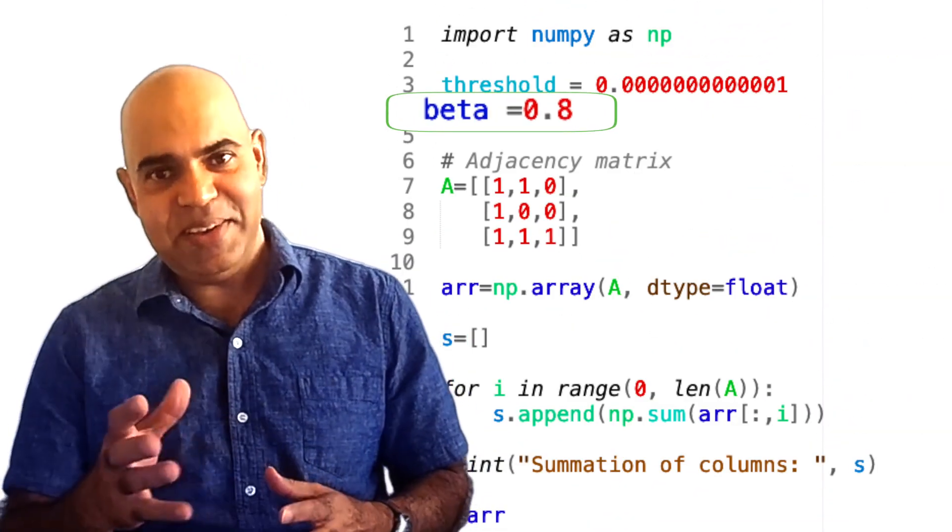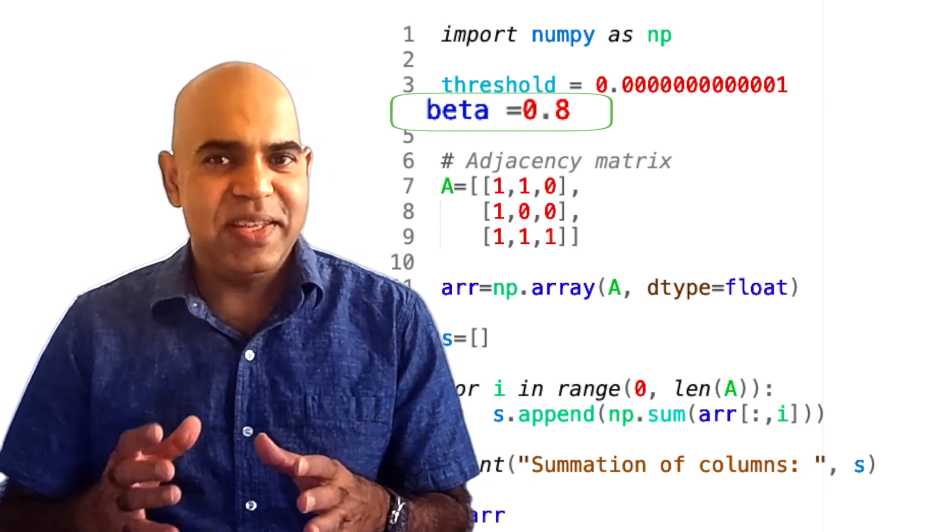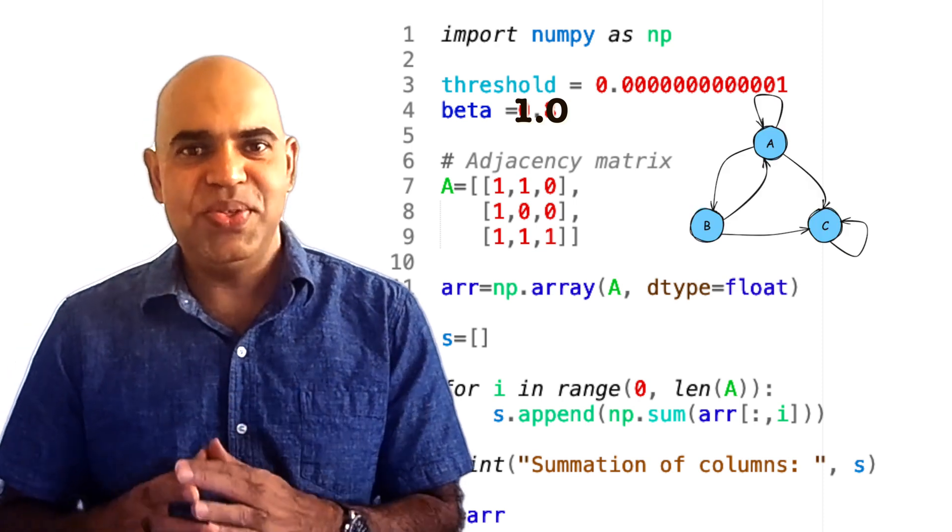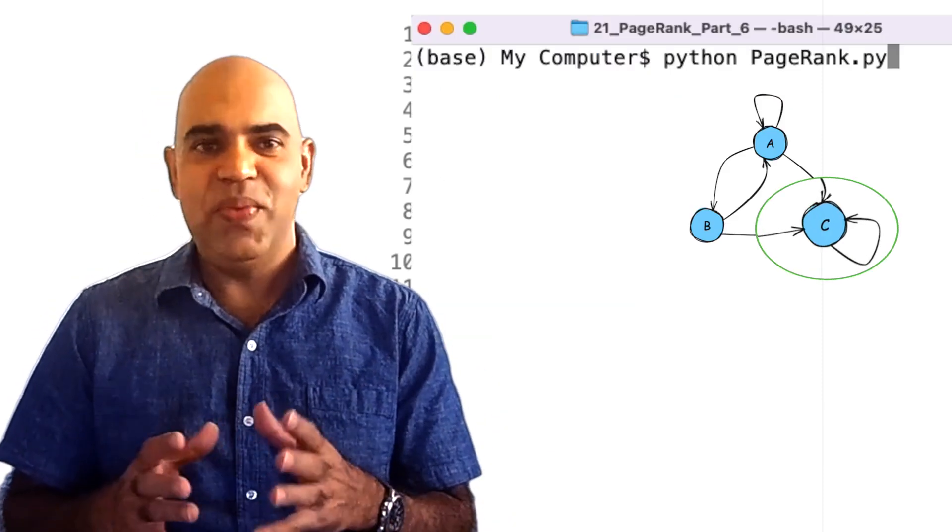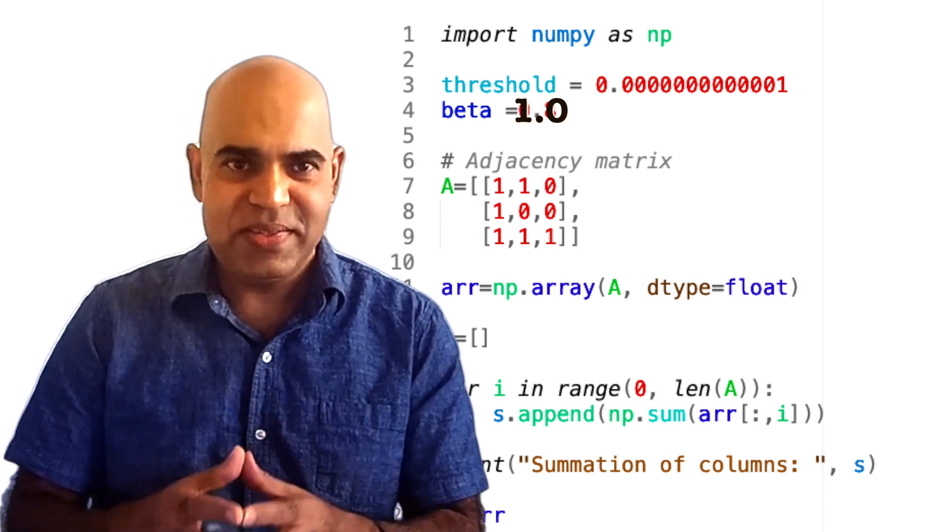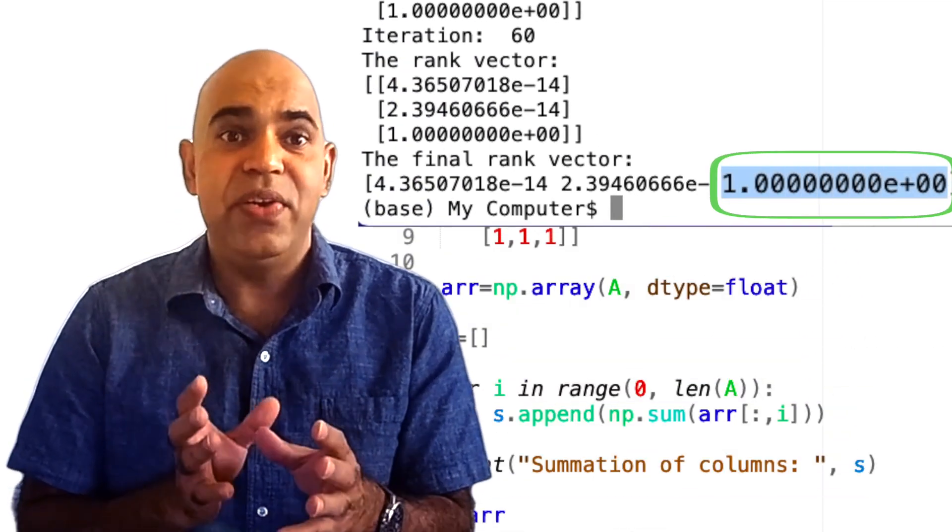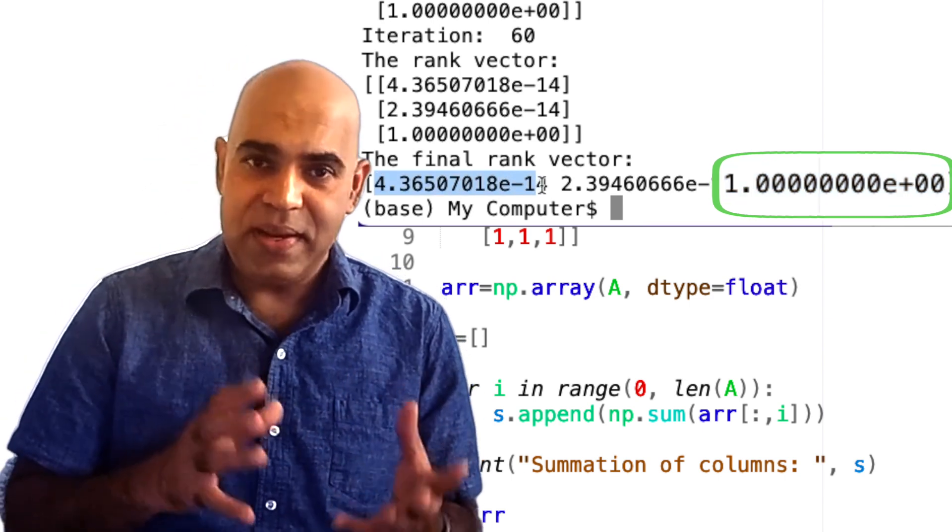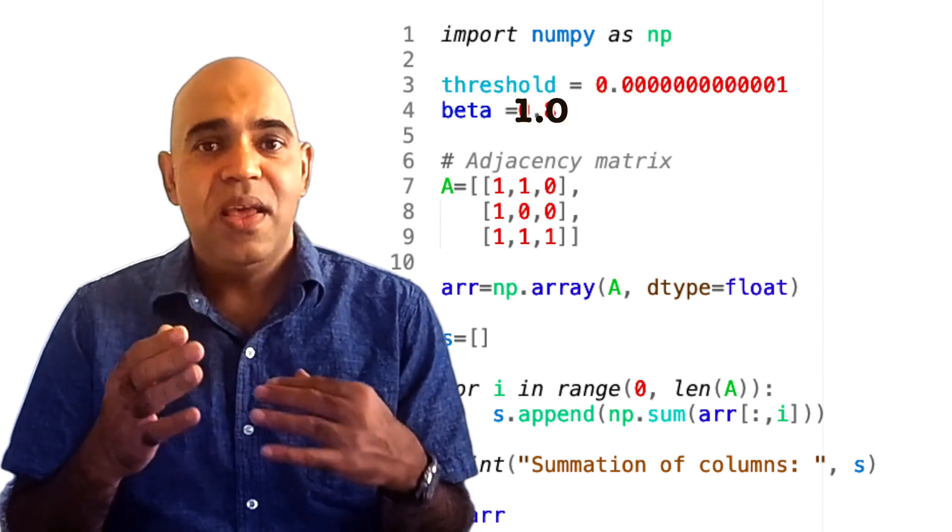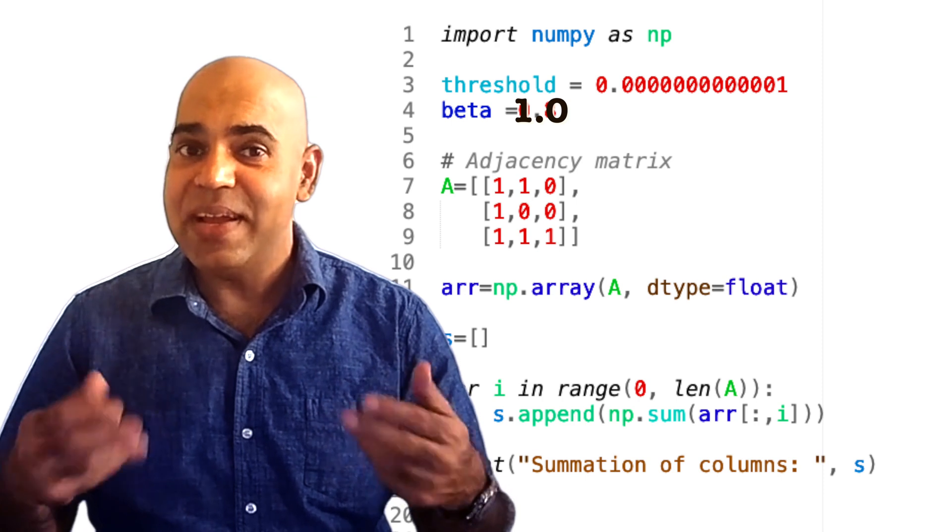You can change this beta damping factor and test what happens. If we change this beta value to 1.0, our page rank juice will end up on website C. Running the code with beta equal to 1.0, we find that website C has the probability very close to 1 and website A and B have very small probabilities. That means with beta equal to 1.0, the spider trap is active.